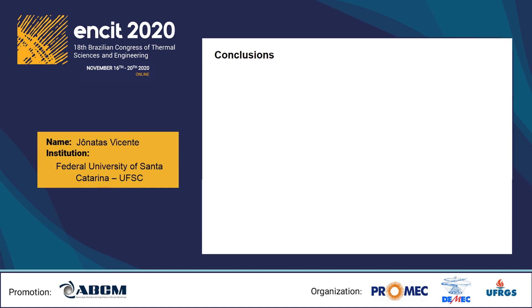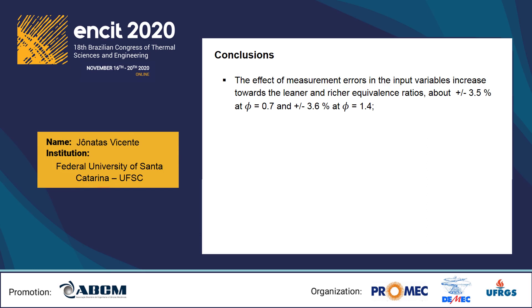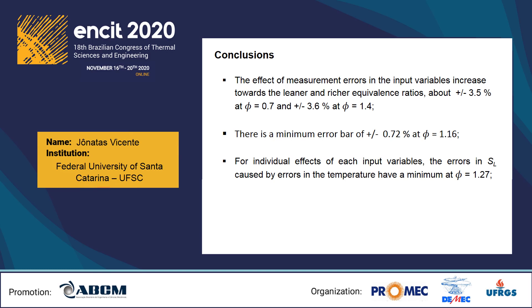Regarding the conclusions, the analysis of the base case for a mixture of isooctane and air at 398 K and 100 kPa with associated errors shows that the effect of measurement errors in the input variables increases toward the leaner and richer equivalence ratios, about ±3.5% at 0.7 and ±3.6% at 1.4. Also, there is a minimum error at equivalence ratio 1.16. The confidence interval in laminar flame speed for the range of 0.4 to 1.4 remains under ±3.6%.